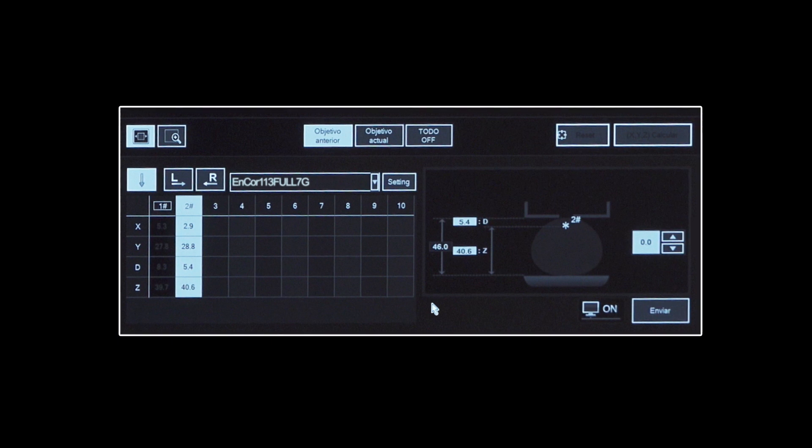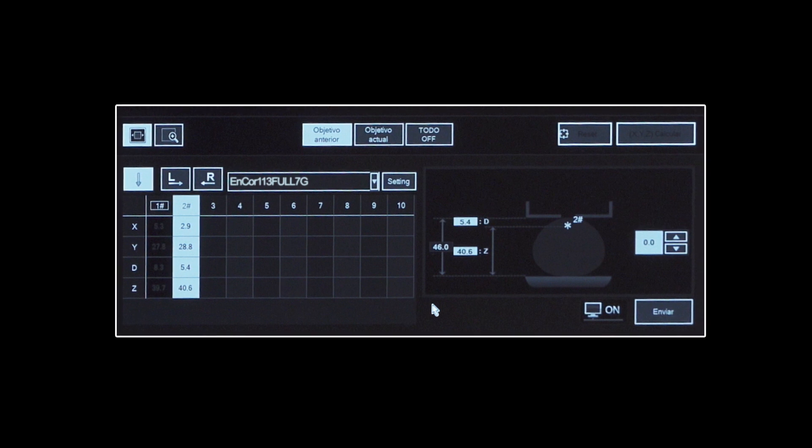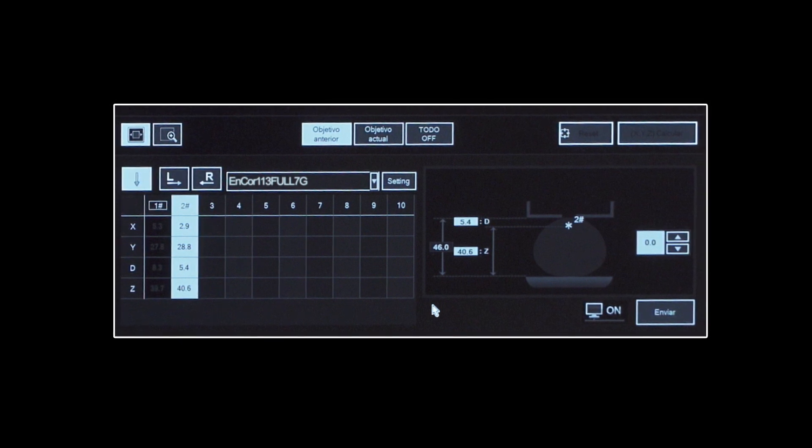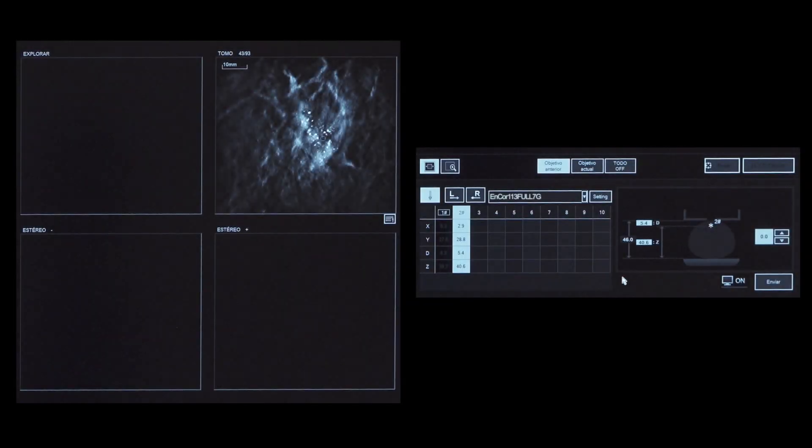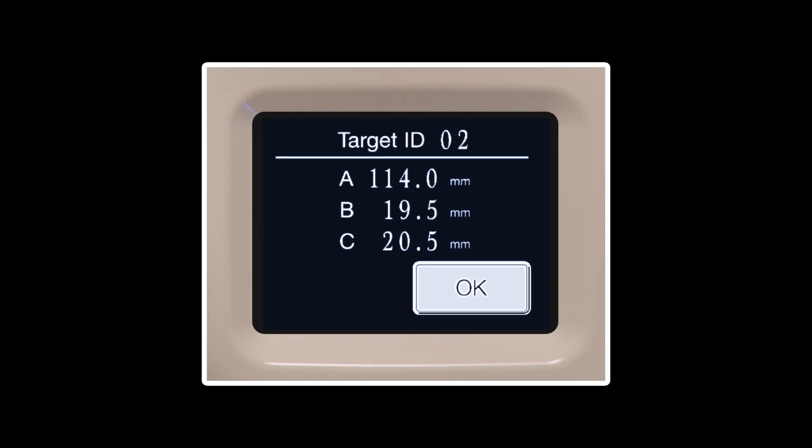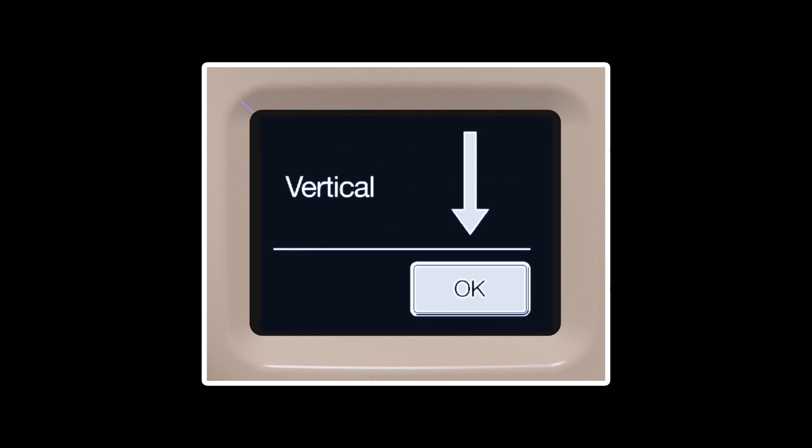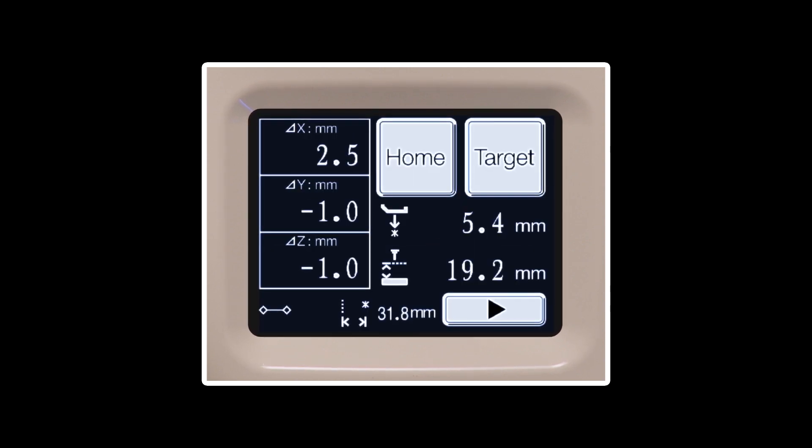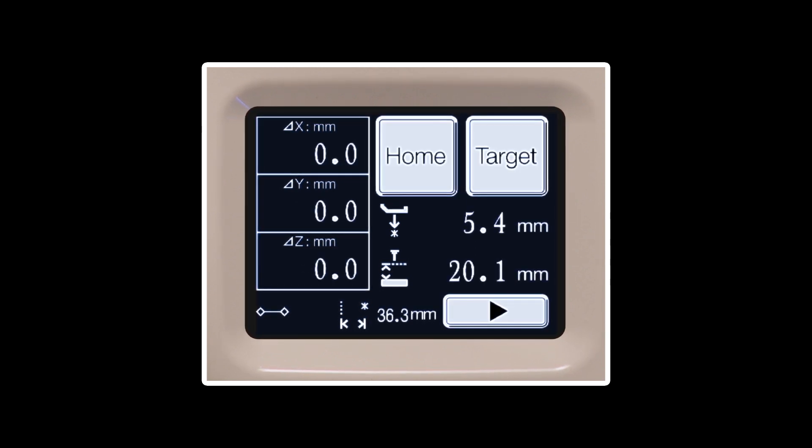It is decided to use NCORE 113 full notch 7G needle, since the procedure can be completed with a smaller number of samples. Needle is selected and values confirmed. Click the Send button to send coordinates and needle characteristics to the biopsy positioner. Confirm target ID and needle characteristics. Confirm vertical approach. The target information is displayed. Press the target button to drive the needle holder to the selected target coordinates.